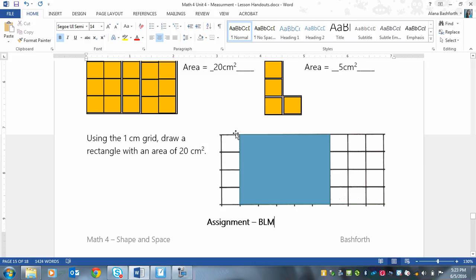So that's what you're going to be doing. You're making sure that the rectangle has the right number of squares in it, or you're counting the squares. Your assignment is the BLM.